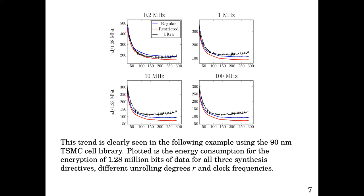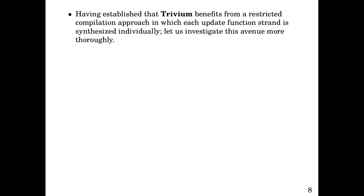This trend is clearly seen in the following example using the 90 nanometer TSMC cell library. Plotted is the energy consumption for the encryption of 1.28 million bits of data for all three synthesis directives, different unrolling degrees of r, and clock frequencies.